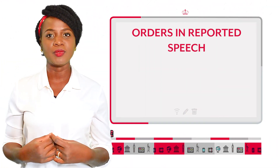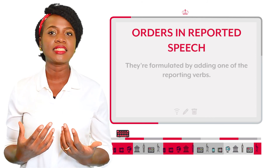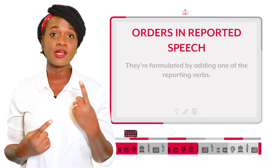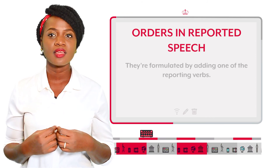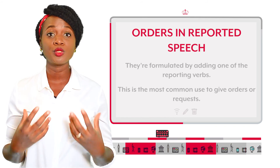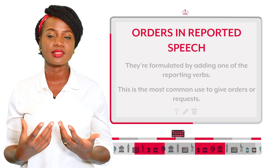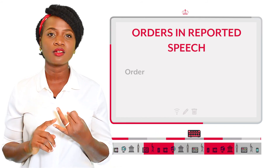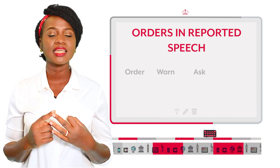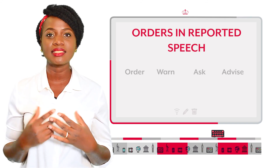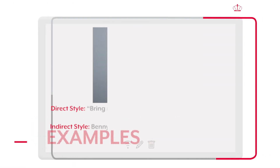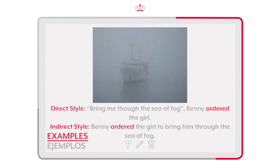Orders in reported speech are formulated by adding one of the reporting verbs. The most commonly used to give orders or requests are: order, warn, ask, advise, and forbid. Example: 'Bring me through the sea of fog,' Benny ordered the girl. Benny ordered the girl to bring him through the sea of fog.